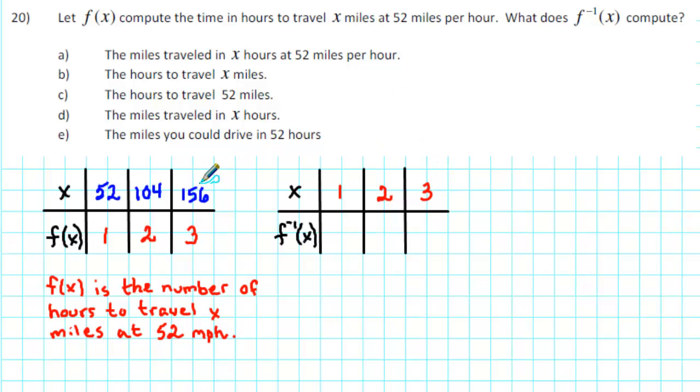Similarly, the inputs of f will become the outputs of f inverse. So we'll have 52 miles, 104 miles, and 156 miles as our outputs.